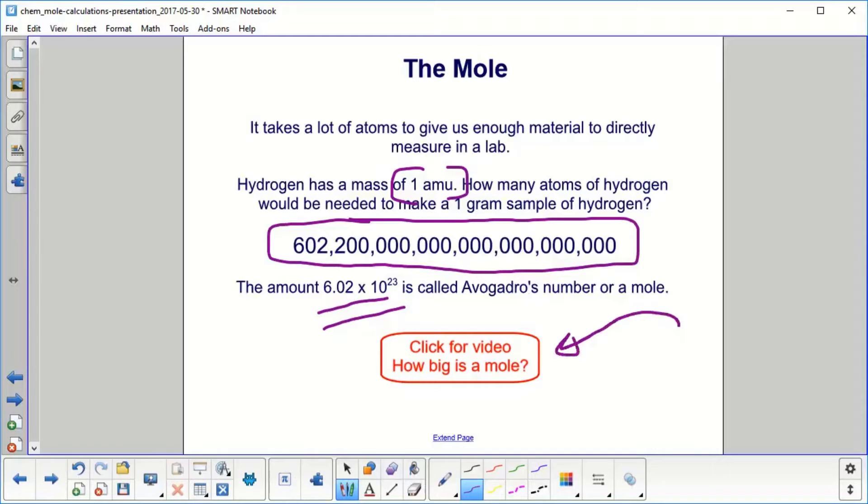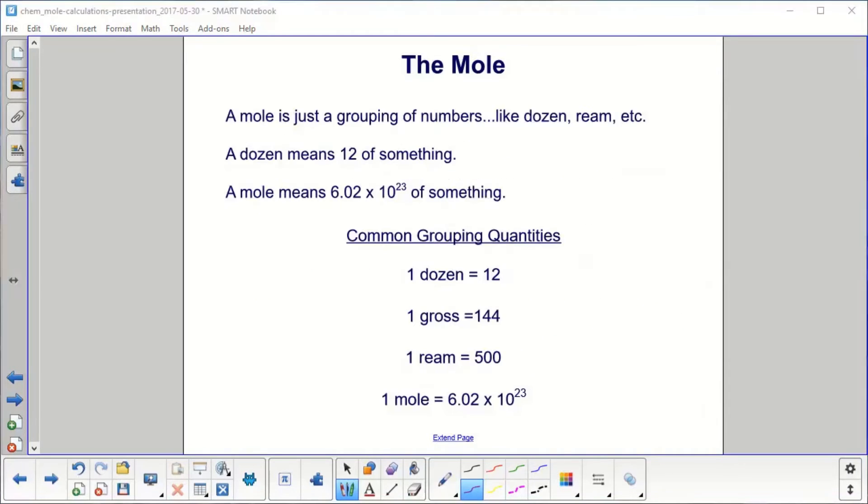And you can click here. This is a nice video on how big a mole really is. And we're going to cover that in the next few slides in addition. But don't be scared of it just because it has a funny name. It's just a grouping of numbers like dozen, ream, etc. A dozen means 12 of something. A mole means 6.02 × 10^23 of something.